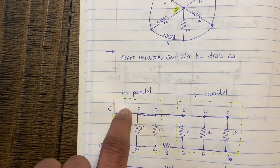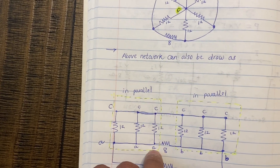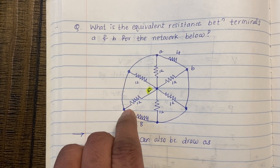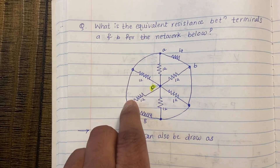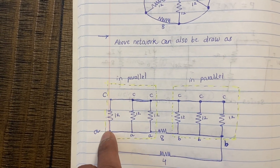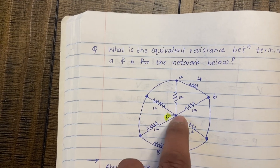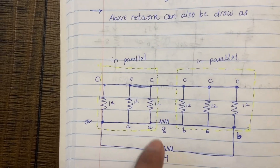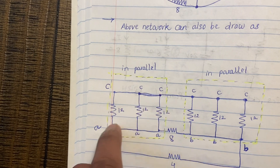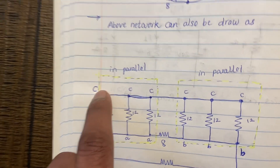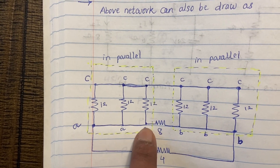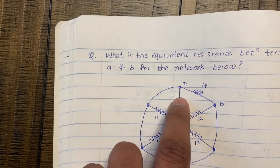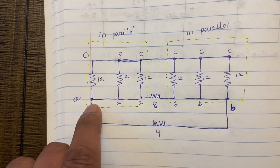After the 8Ω resistance, the point will become A. If you connect all these points at the other end of the 8Ω resistance, it is the same point A. So from point C to point A, there are also three 12Ω resistances. Additionally, there is a 4Ω resistance directly across A and B.